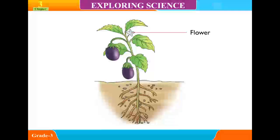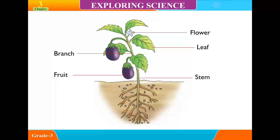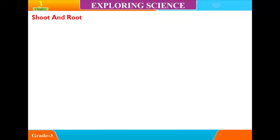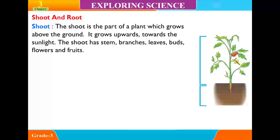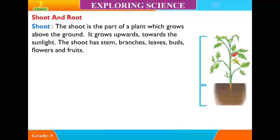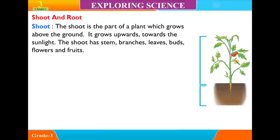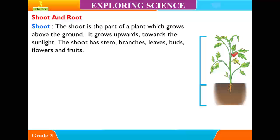The parts of a plant are: flower, branch, leaf, fruit, stem, and root. The shoot is the part of a plant which grows above the ground. It grows upwards towards the sunlight. The shoot has stem, branches, leaves, buds, flowers and fruits.